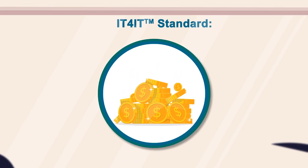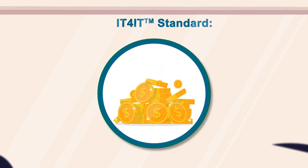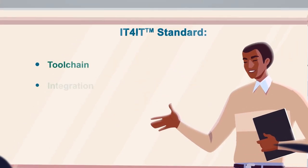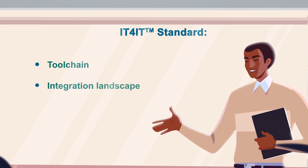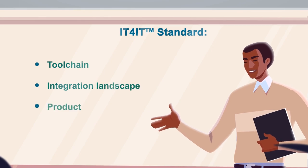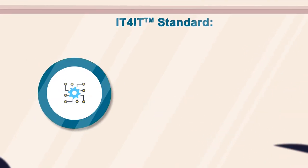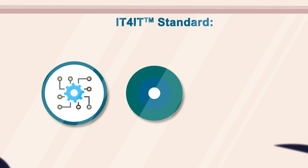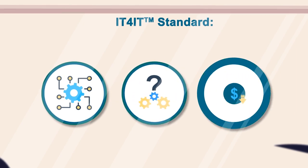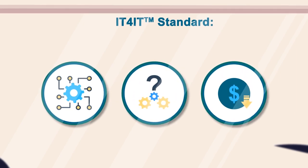Vendors and digital practitioners can also use the IT for IT standard to create a blueprint for the desired state of their toolchain, integration landscape and product lifecycle traceability. This allows for a more consolidated and automated toolchain, reducing costs and complexity in digital product delivery.